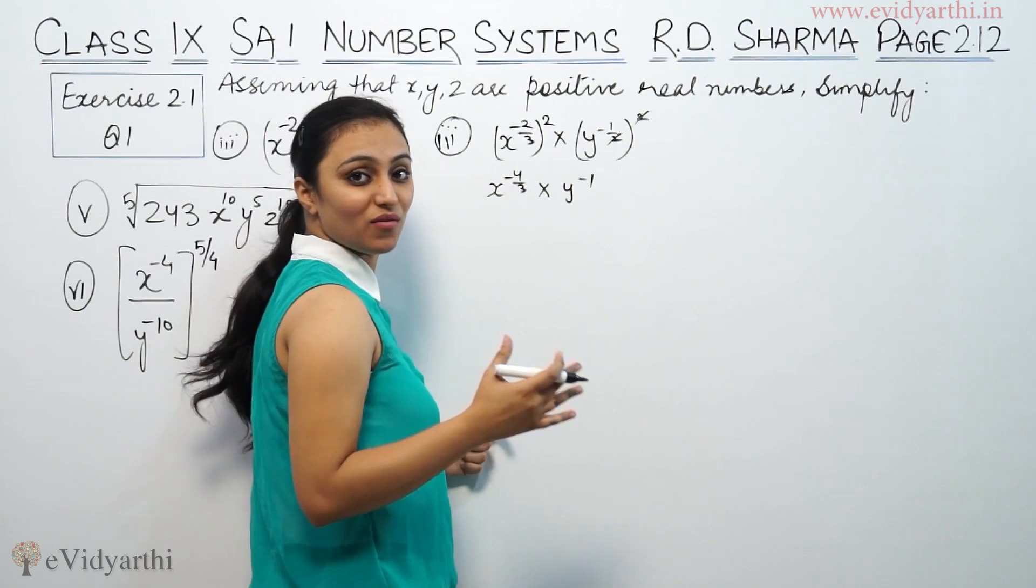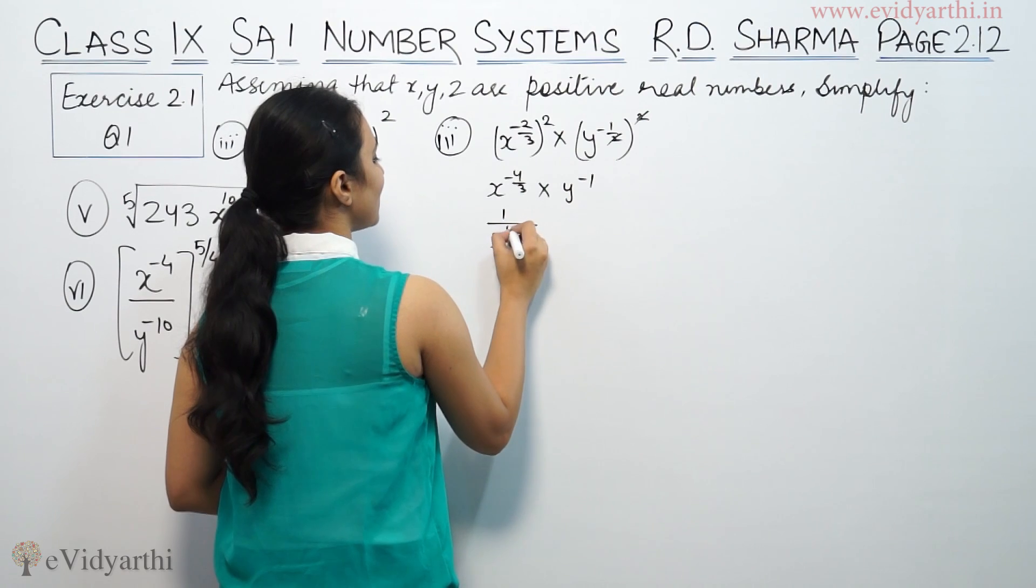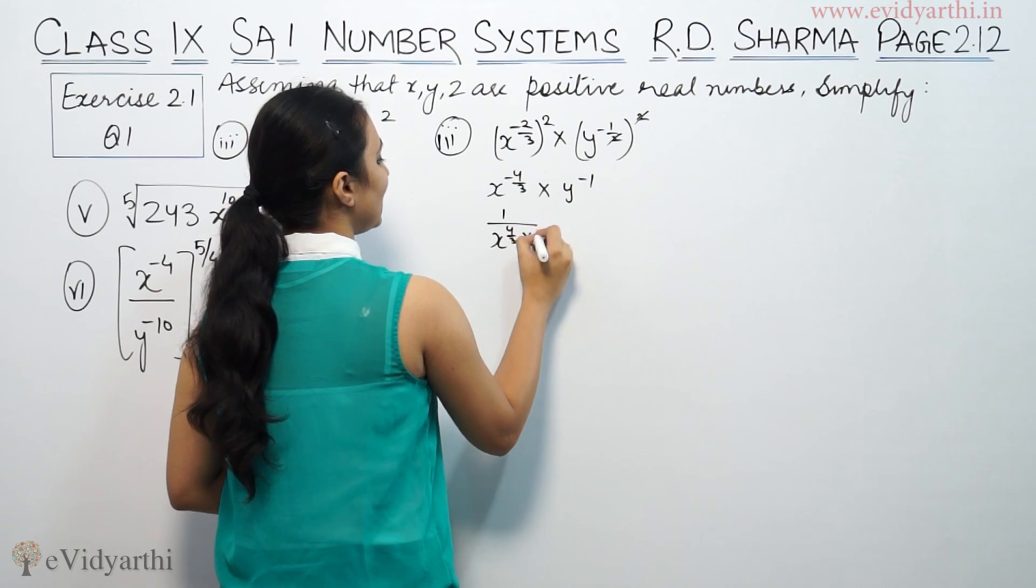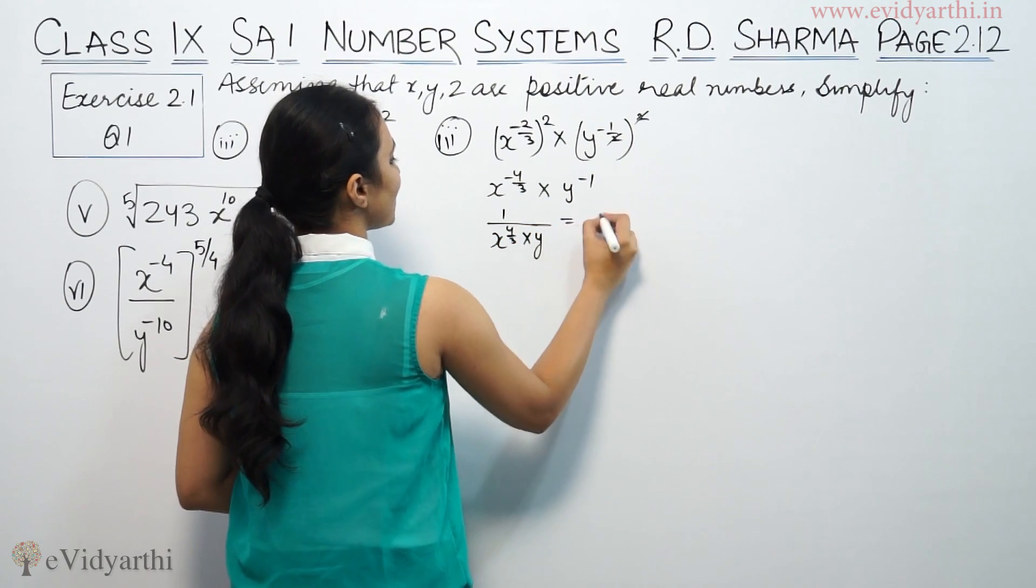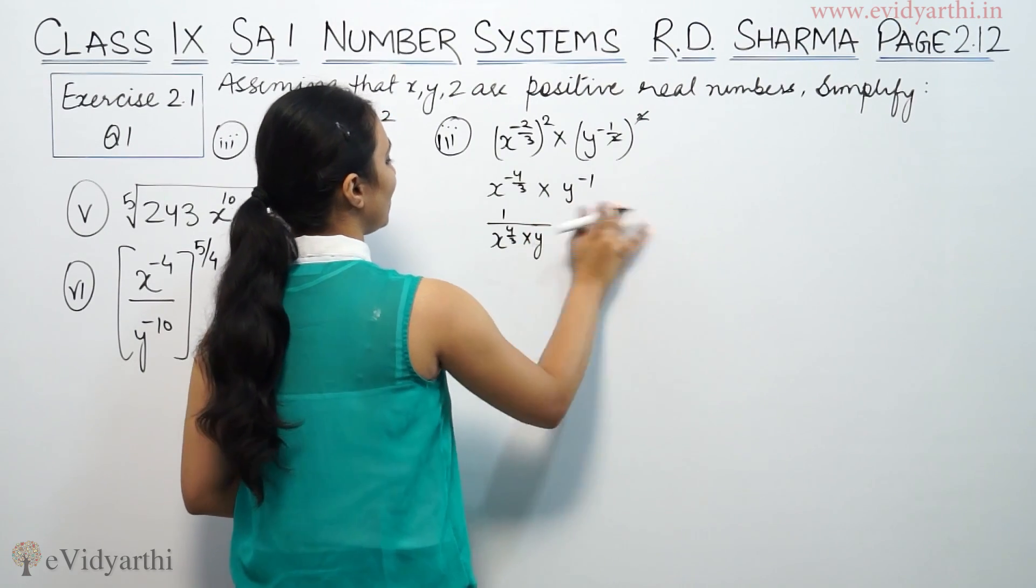So, powers are negative. All the powers are positive. So this will be 1 upon X raised to the power 4/3 into Y. So this is the answer: 1 upon X raised to the power 4/3 into Y.